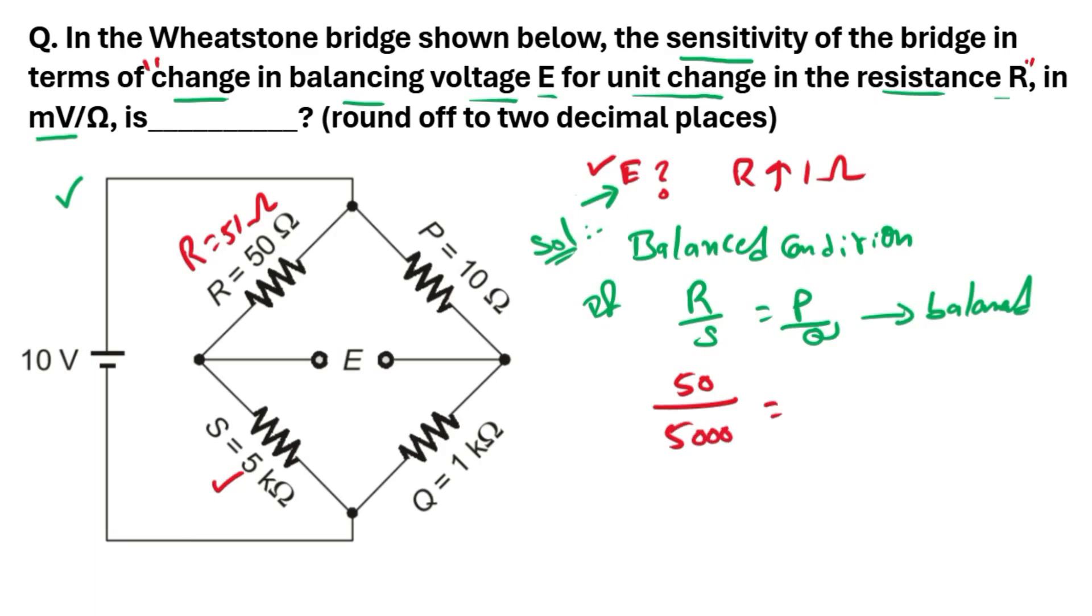That is equal to P, which is given as 10 ohms, divided by Q already given 1 kilo ohm, that means 1000. If you find out the value, it is 0.01 that is equal to 0.01. So both are equal, our bridge is balanced.